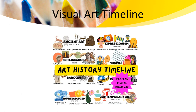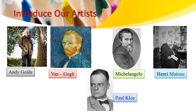We will be discussing the visual art timeline — from ancient civilization and culture to contemporary art — and we will be detecting the changes in style and elements of art. Let me introduce our artists: Andy, Van Gogh, Michelangelo, Henry, and Paul Klee. These artists came from different art periods where they had different adaptations and their own situations.